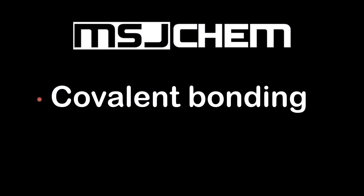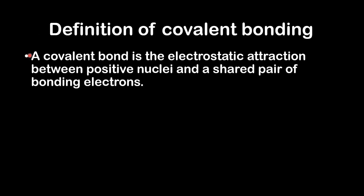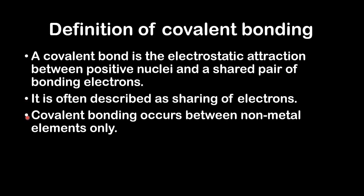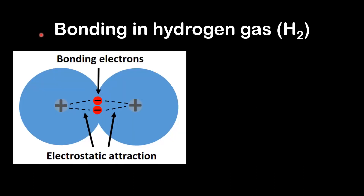In this video I will be looking at covalent bonding. A covalent bond is the electrostatic attraction between positive nuclei and a shared pair of bonding electrons. It is often described as sharing of electrons. Covalent bonding occurs between non-metal elements only. The electronegativity difference between atoms is between 0 and 1.7 units.